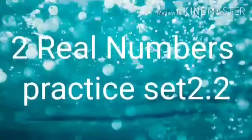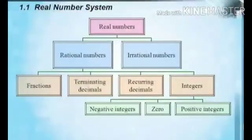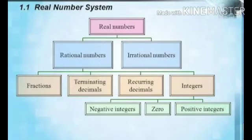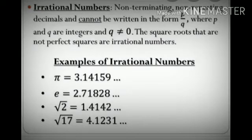Before starting practice set 2.2, we will learn classification of real numbers. Real numbers are divided into two parts: first, rational numbers; second, irrational numbers. Rational numbers are further divided into four parts: fractions, terminating decimals, recurring decimals, and integers. Integers are further divided into three parts: negative integers, zero, and positive integers.